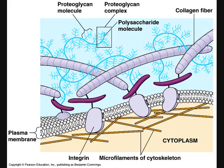The extracellular matrix is made up of three major classes of molecules: structural proteins, specialized proteins, and proteoglycans.